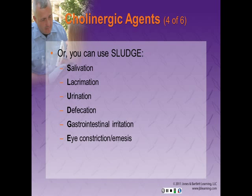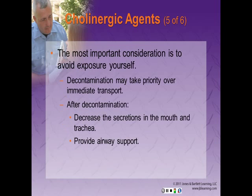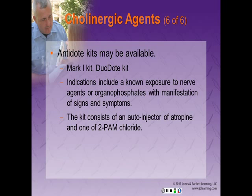Alternatively, and more commonly used here, is the mnemonic SLUDGE: Salivation, Lacrimation, Urination, Defecation, GI irritation, and Eye constriction/Emesis. The most important consideration is to avoid exposure yourself. Decontamination may take priority over immediate transport; after decontamination, priorities are to decrease secretions in the mouth and trachea and provide airway support. Antidote kits may be available — the most common are the Mark 1 kit or the DuoDote kit, which consist of an autoinjector of atropine and one of 2-PAM chloride. Indications include known exposure to nerve agents or organophosphates with manifestation of signs and symptoms.